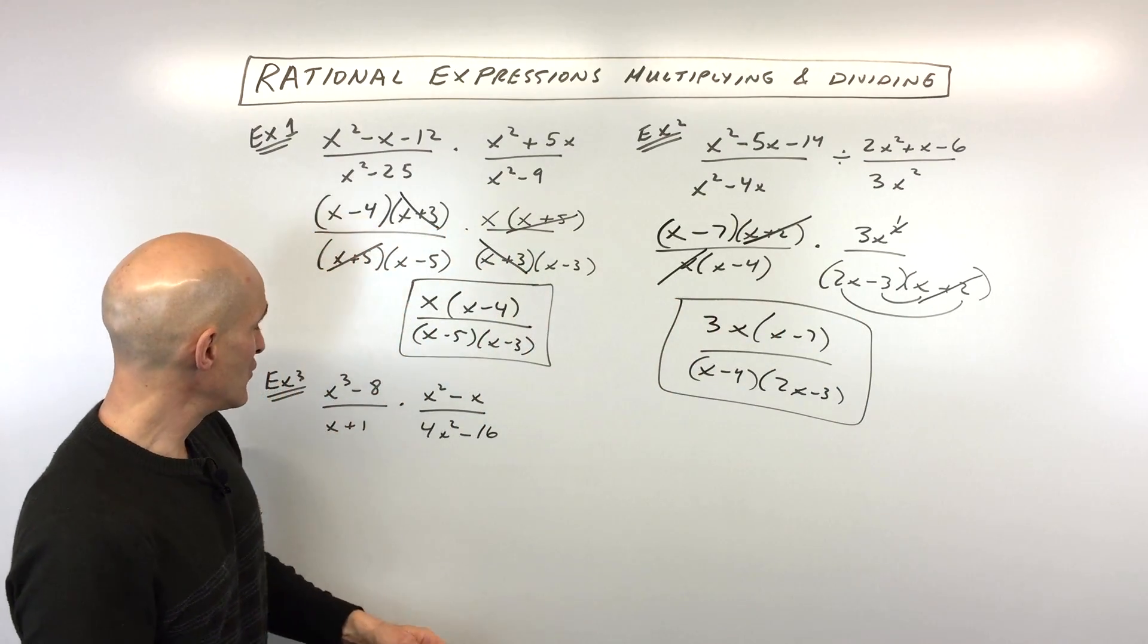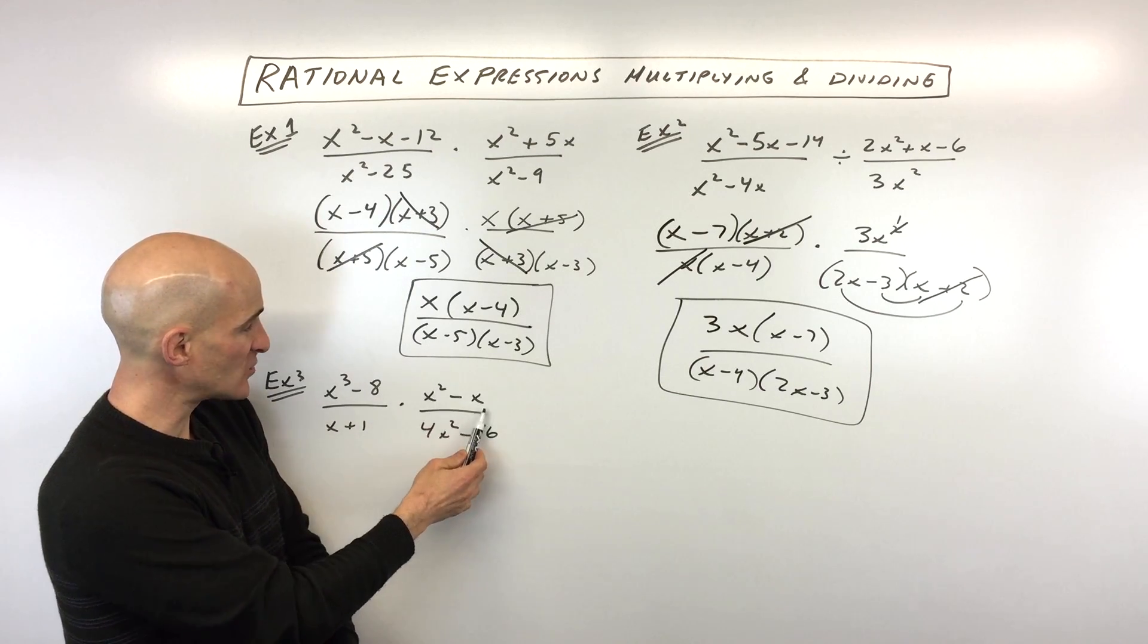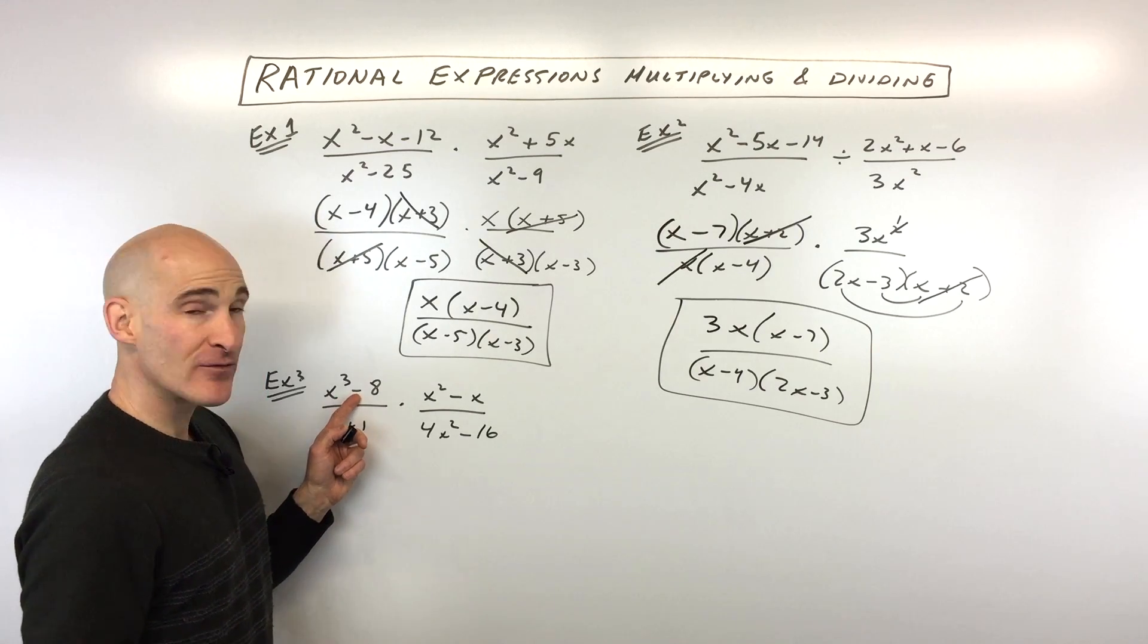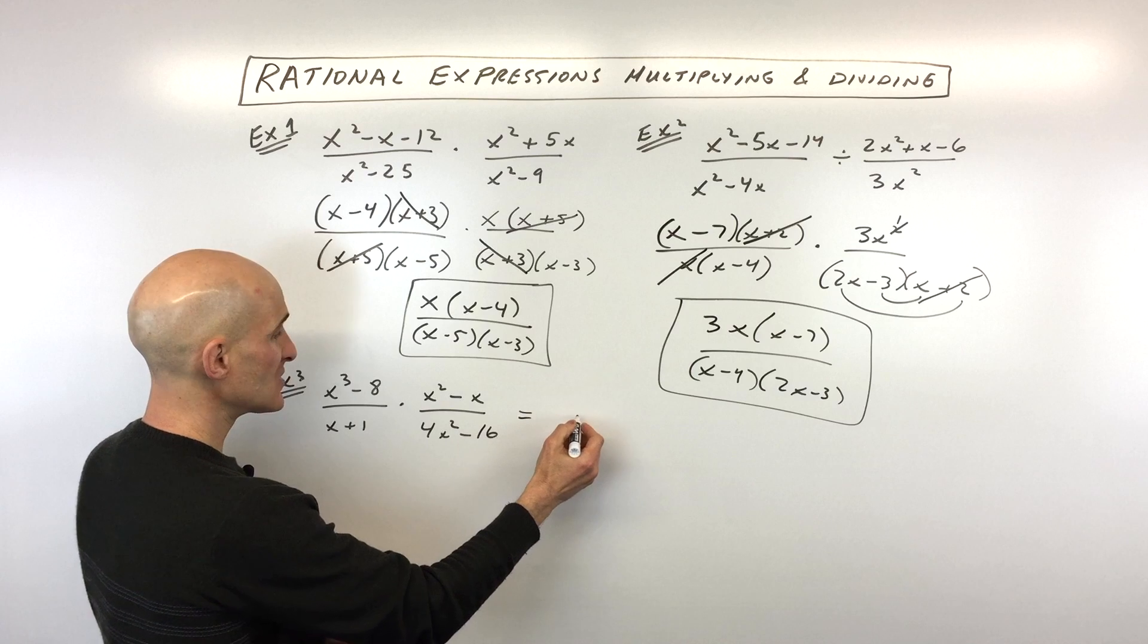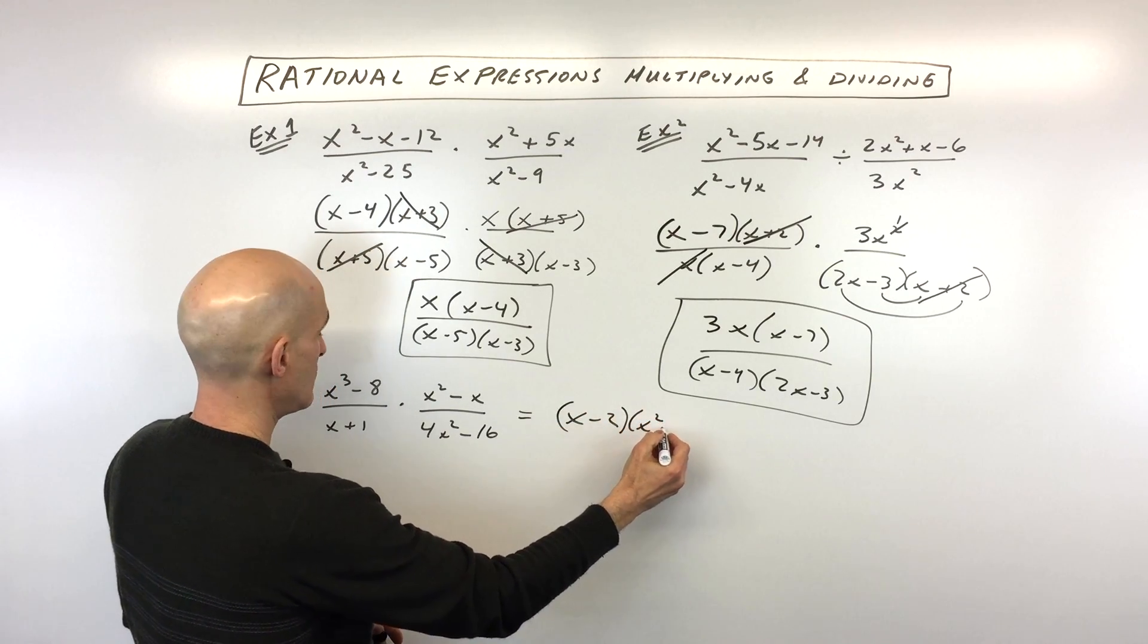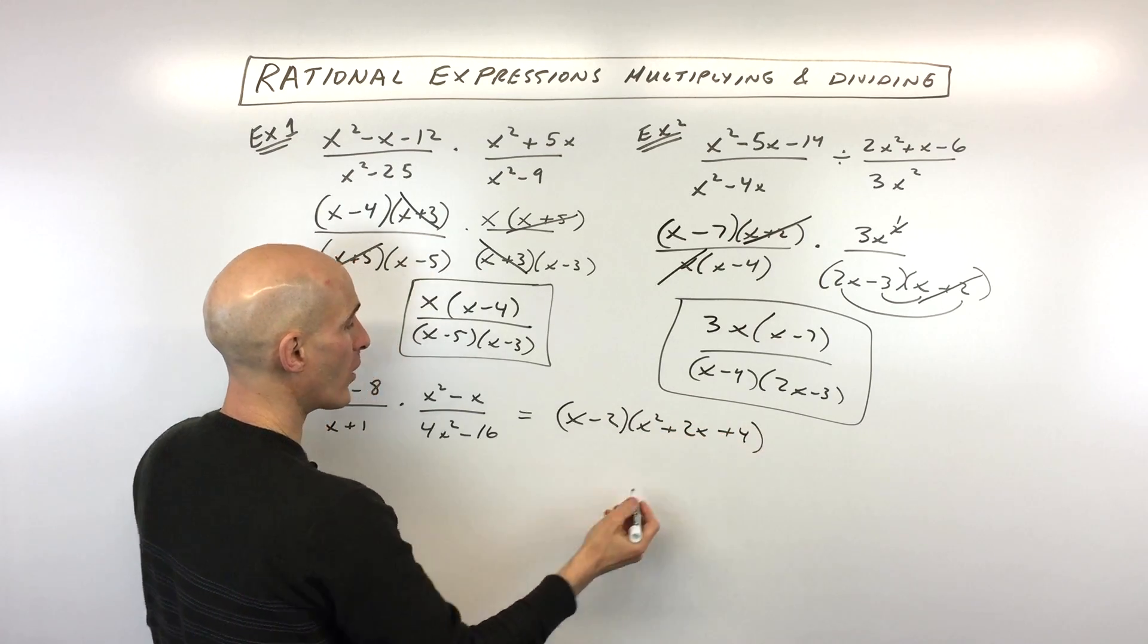Number 3, see if you can do this one. We've got x cubed minus 8 over x plus 1 times x squared minus x over 4x squared minus 16. This one is a difference of 2 cubes. So let's see if we can do that over here. This is going to be x minus 2, x squared plus 2x plus 4.